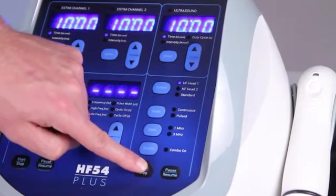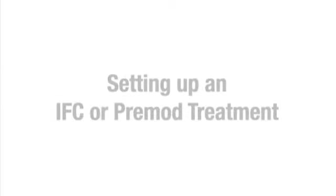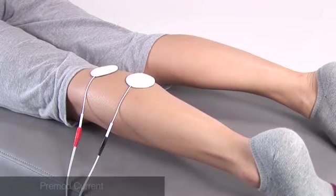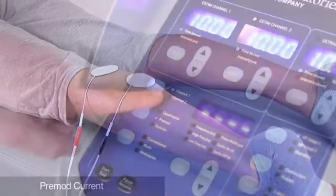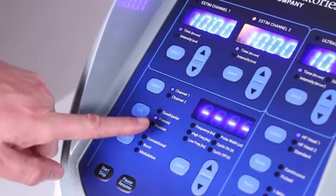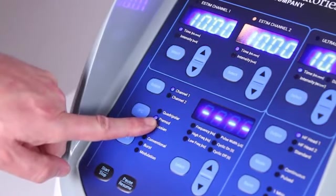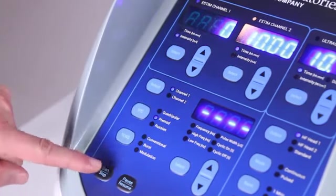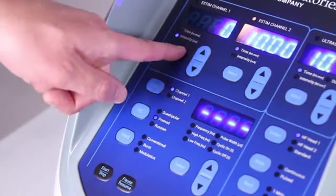To use pre-mod treatment for a smaller area, position two electrodes on your patient and select channel one and pre-mod. Start the treatment and set the time and intensity using the up and down arrows.